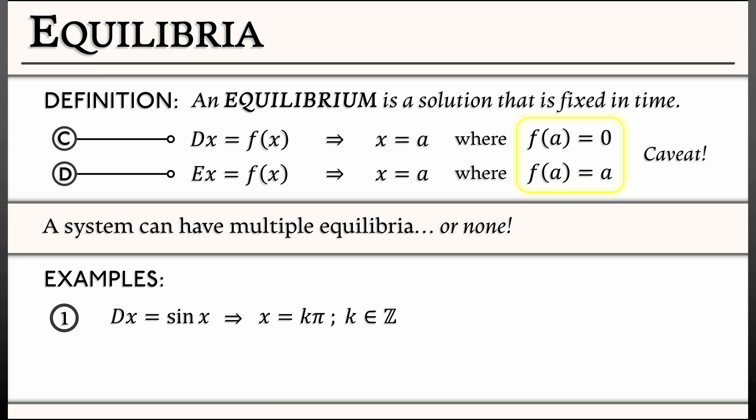But let's consider the discrete time analog, Ex equals sine of x. Now we need to solve x equals sine of x, and that has but one solution, at x equals zero. That is the only equilibrium in this system.